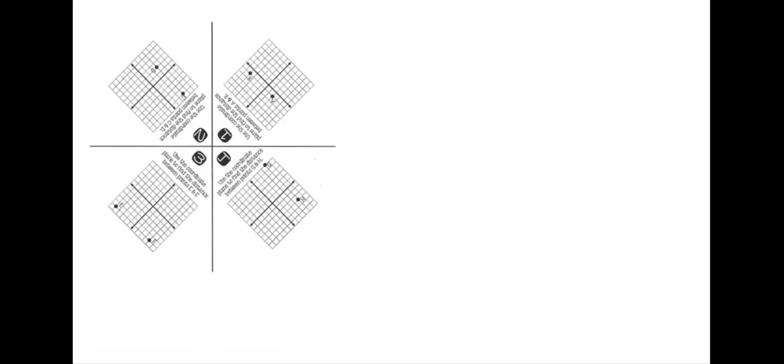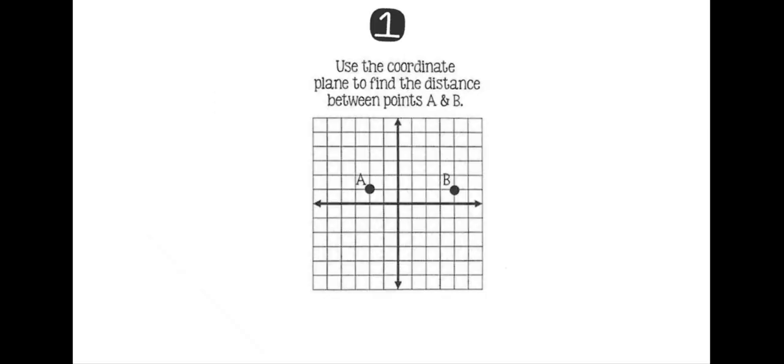Welcome. Today we are going to find the distance between two points and we're going to use this foldable to help us do so. One side looks like this. If you flip it over, the other way has these four example problems. Let's try the first one. We're going to try to find the distance between A and B. So again, we're trying to find the distance of that line right there from A to B.